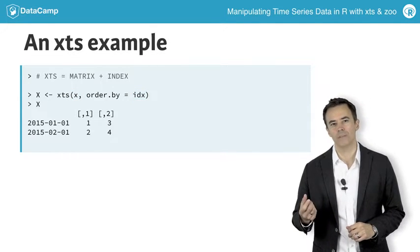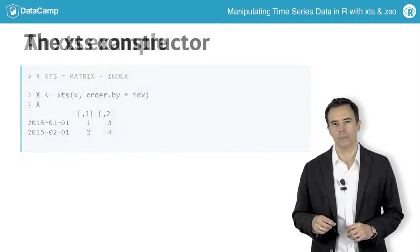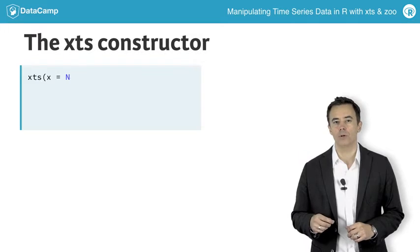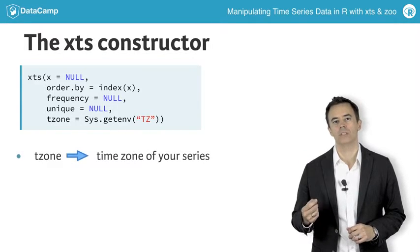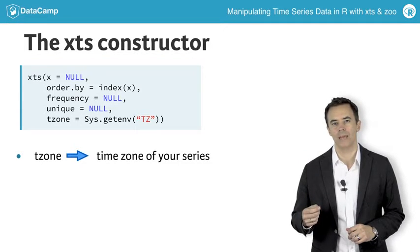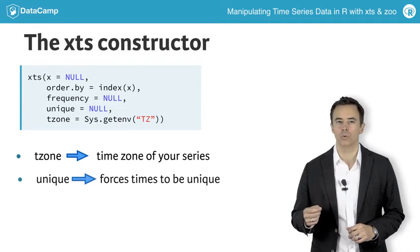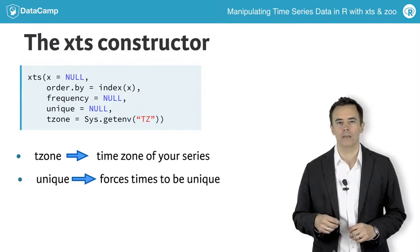The constructor has a few optional arguments, the most useful being tzone to set time zones, and unique, which will force all times to be unique.